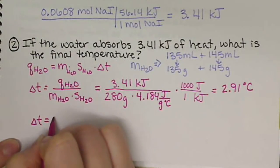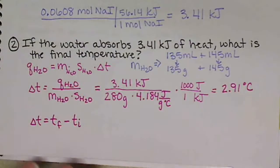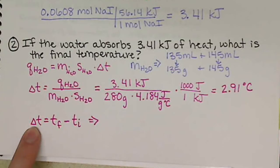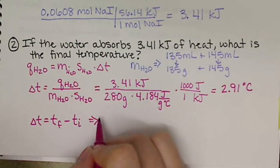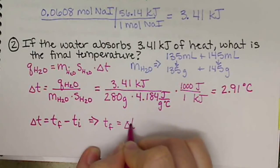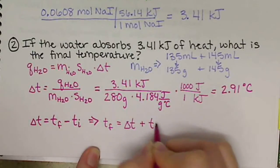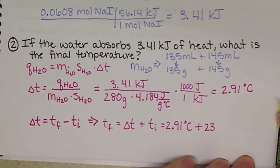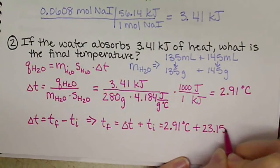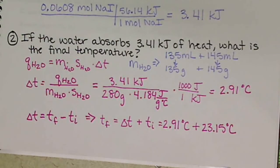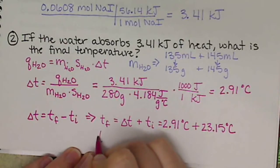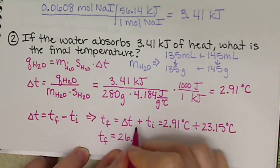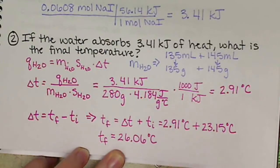Delta T equals T final minus T initial. We know T initial is 23.15 degrees Celsius, and our delta T is 2.91 degrees Celsius. So we're solving for T final, which is delta T plus T initial: 2.91 degrees Celsius plus 23.15 degrees Celsius. So my maximum temperature reached by the solution is going to be 26.06 degrees Celsius.